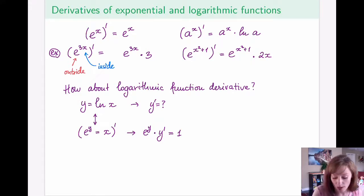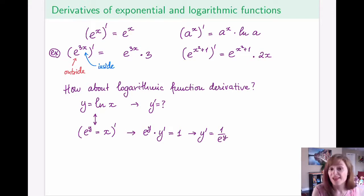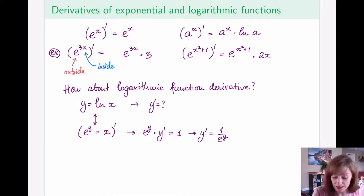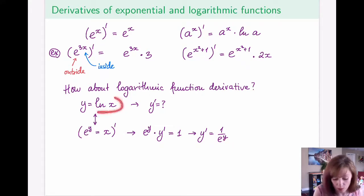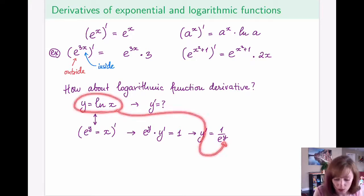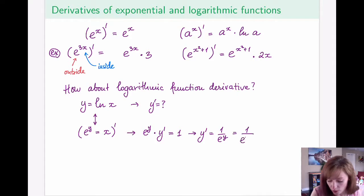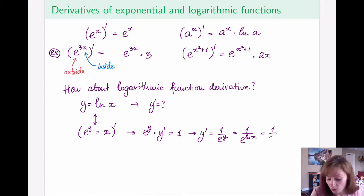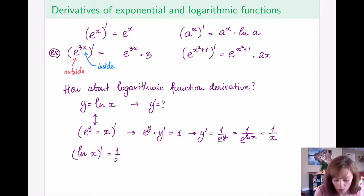We're after y prime, so we solve this equation for y prime and get 1 over e to the power y. Preferably the answer only contains x's, and since y = ln(x), substituting gives 1 over e to the power ln(x). Since e and ln are inverses of each other, this simplifies to simply 1 over x. So the derivative of ln(x) is just 1/x.